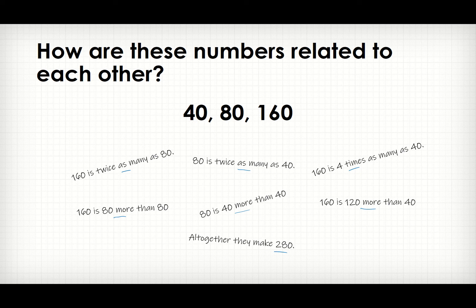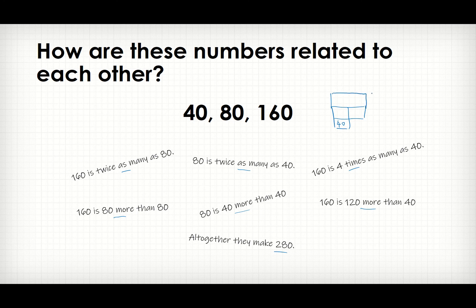So let's draw a model to represent them. 80 is twice as many as 40, so this would be 80 while this would be 40. And 160 is twice as many as 80. Now 160 is over here, twice as many as 80. And you can see that all of them have the same units.